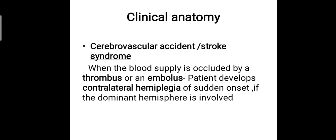The clinical anatomy of the internal capsule is important because it is a condensed bundle of fibers running from the cortex to the subcortical centers. If the blood supply is blocked — occluded by a thrombus or embolus — that condition is termed a cerebrovascular accident or stroke syndrome. Because the internal capsule is such a condensed area, even a small occlusion can cause extensive effects, and the patient develops contralateral hemiplegia of sudden onset — paralysis of the opposite side of the body — particularly when the dominant hemisphere is involved.